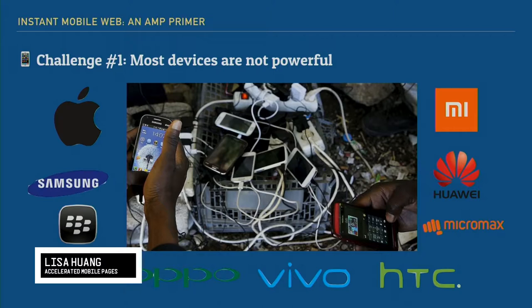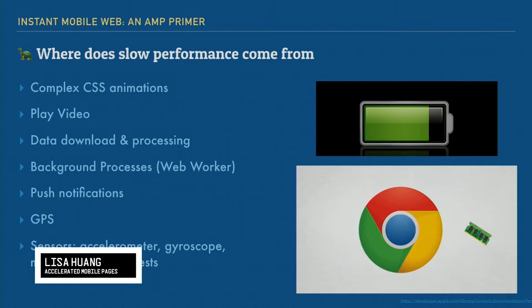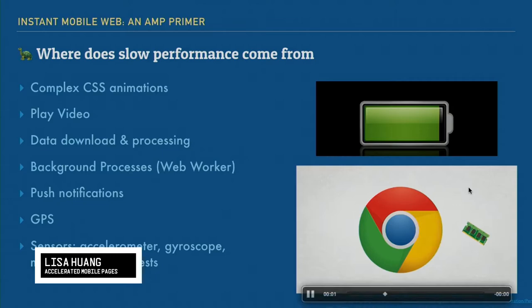There's actually a lot of Blackberries running around. When I was working in corporate in South Africa, all the company phones were still Blackberry — and that's in the last two years, not seven years ago. So where does the slow performance come from when you're using a phone that's not as powerful? Things like complex CSS animations, playing video with constant re-rendering and recalculating layout and painting on screen, background tasks like web workers, service workers, push notifications, GPS, data download and parsing — all of that requires a lot of CPU and energy. That's why your phone heats up.